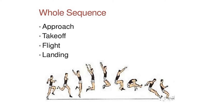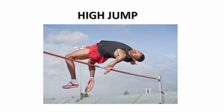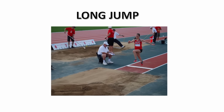For jumping events, the whole sequence involves: approach, take-off, flight, and landing. In the high jump, the athlete gets a running start and must jump over a bar without knocking it over, landing on a large soft cushion. As with many track and field events, technique is very important — timing, leaving your feet at the right point, and how you bend your body as you go over the bar are all critical.